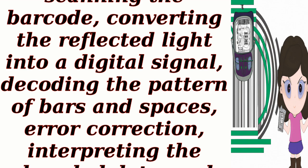In summary, a barcode scanner reads information by scanning the barcode, converting the reflected light into a digital signal, decoding the pattern of bars and spaces, error correction, interpreting the decoded data, and outputting the information for further processing.